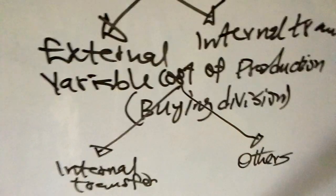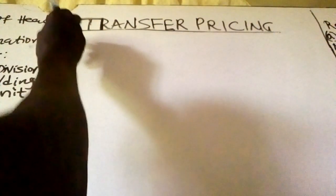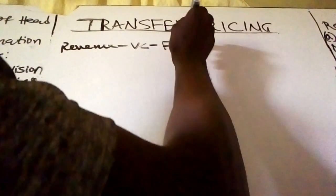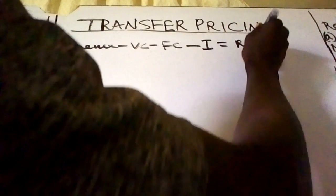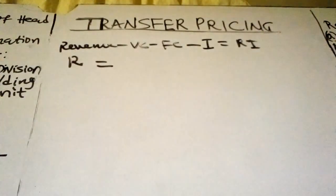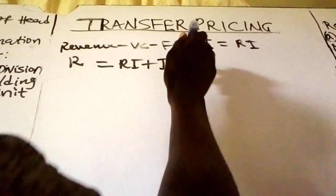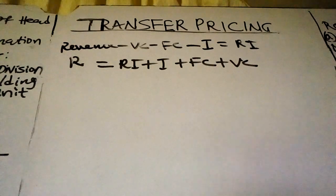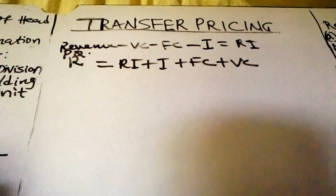To summarize: revenue minus variable cost, minus fixed cost, minus imputed interest gives you residual income. When we make revenue the subject of the formula, we have: revenue equals residual income plus imputed interest plus fixed cost plus variable cost. Remember, revenue is the product of price and quantity.